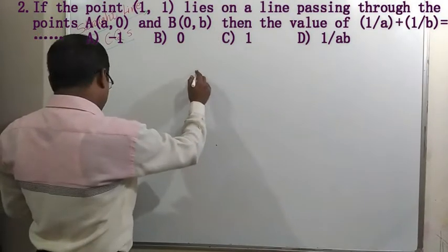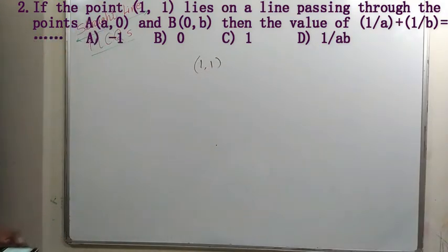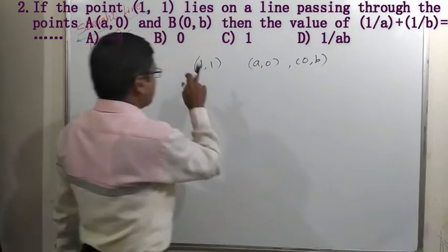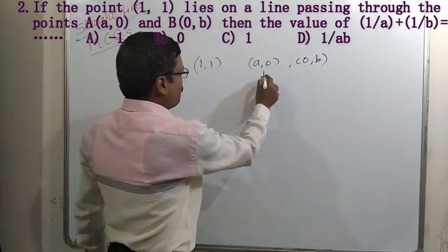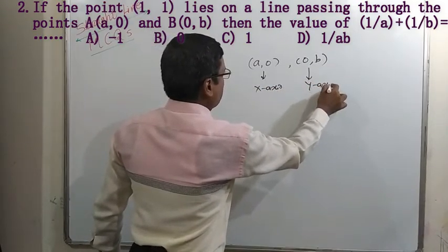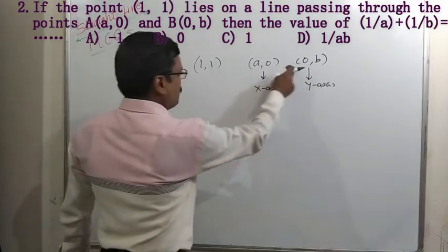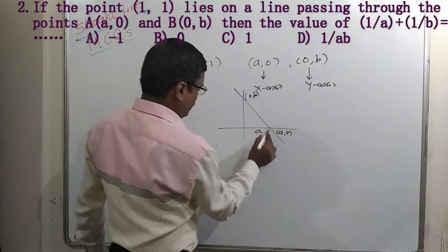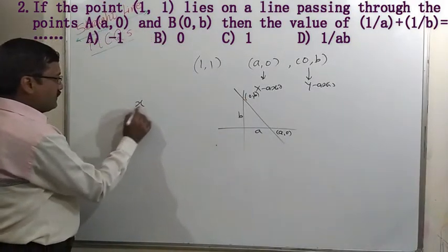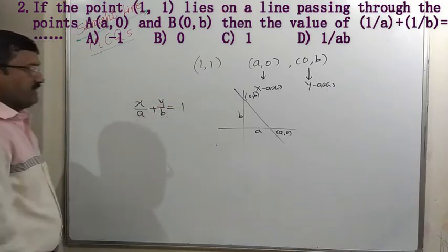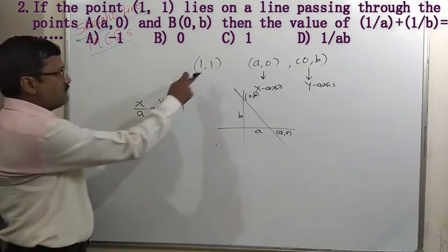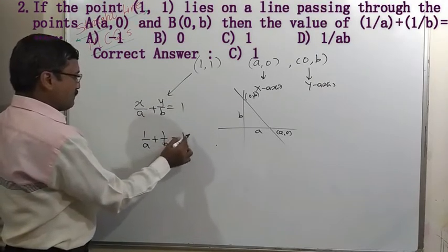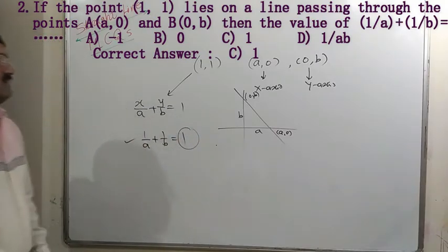In example 2, the point (1, 1) lies on a line passing through points (a, 0) and (0, b). Here (a, 0) lies on the x-axis and (0, b) lies on the y-axis, so a is the x-intercept and b is the y-intercept. The equation of this line in double intercept form is x/a + y/b = 1.